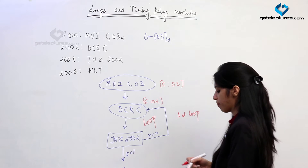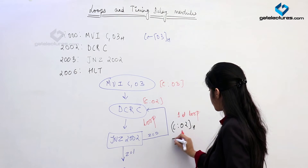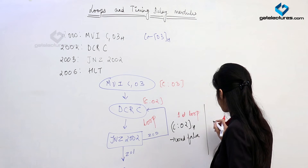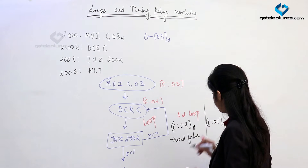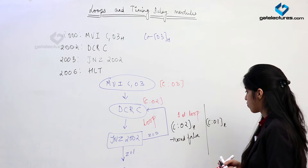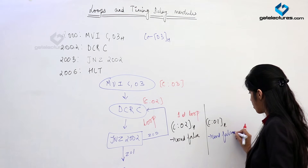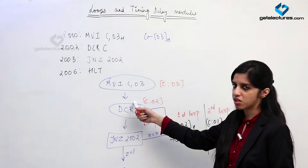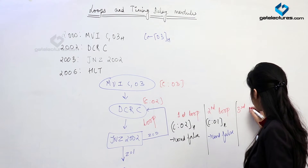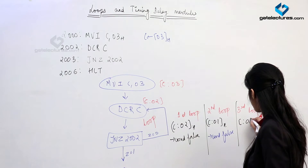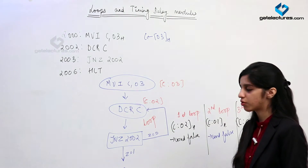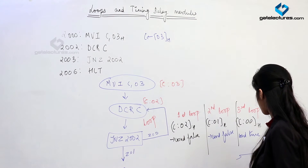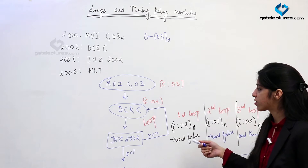In the first loop, C becomes 2 and the condition was false, so we had the first loop. Now again we decrease C - C has become 1. We check the condition - condition is false. This is the second loop. In the third loop, when C becomes 00, we check the condition and now the condition is true, meaning Z flag is 1. Condition true means we get out of the loop and the program stops at halt.